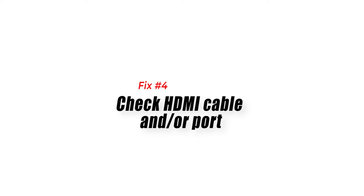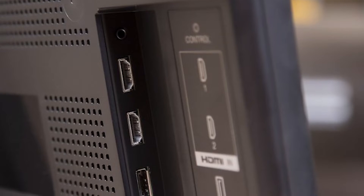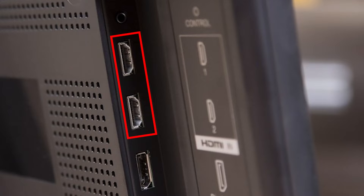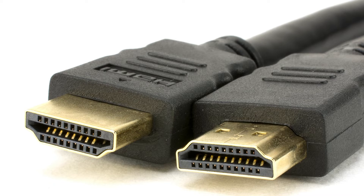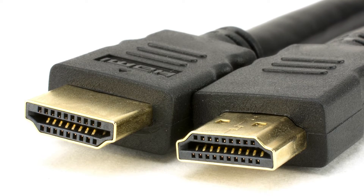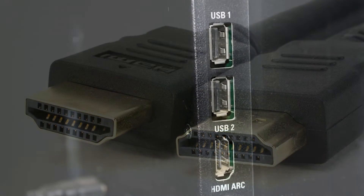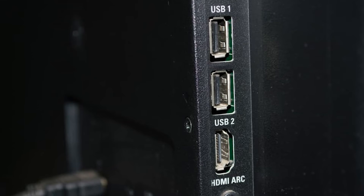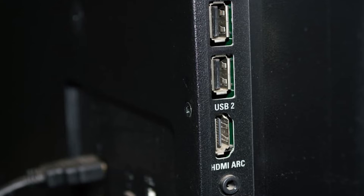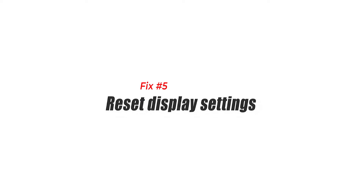Fix number four: check the HDMI cable and port. Your Xbox One console transmits video and audio signals to the TV via HDMI. If your console turns on but keeps showing a black screen, there may be a problem with the HDMI cable — try using a new one. Also, check if the HDMI ports on the Xbox One and TV are dirty; dirt, lint, debris, or foreign objects can block the connection. Clean the HDMI port using compressed air if necessary.